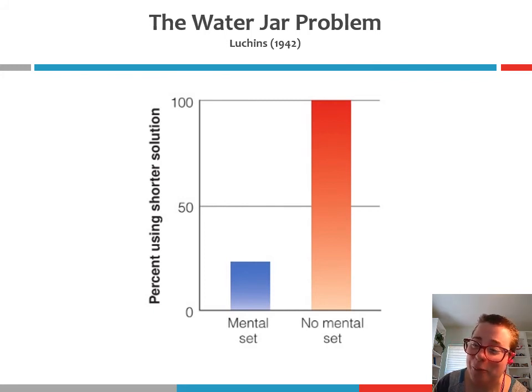In the no mental set group, or the control group, participants just solved problems seven and eight without any of the earlier problems or without a demonstration. So they started with problems seven and eight and had no prior experience with the B minus A minus 2C solution.